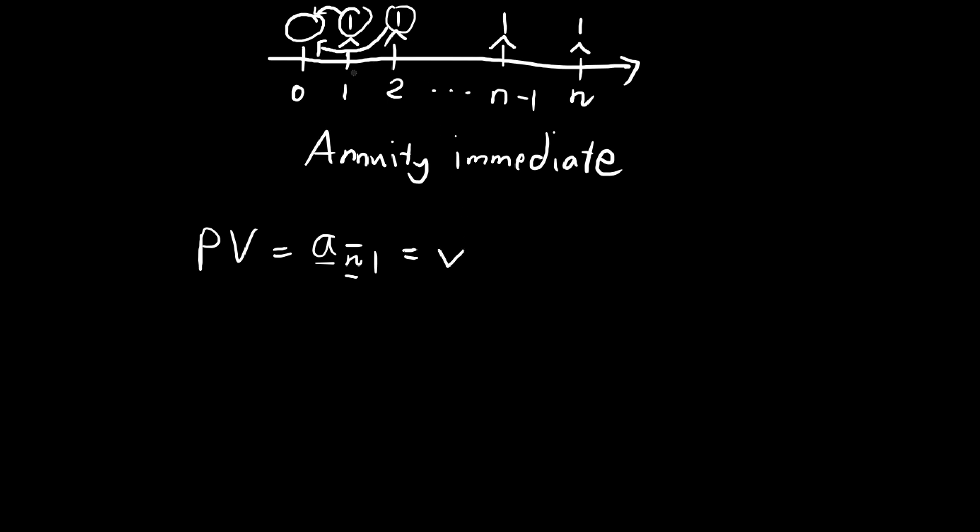Now the second payment, discounting back to time 0, we discount it by 2 periods, so we add v squared. And the same thing goes on. This, we discount it by n-1 periods, and this we discount by n periods. So essentially, we have a geometric series. So how do we evaluate this? We just use the formula. The first term is equal to v, the common ratio is also v, so 1 minus v, and we have n terms, to the power of n, divided by 1 minus the common ratio.